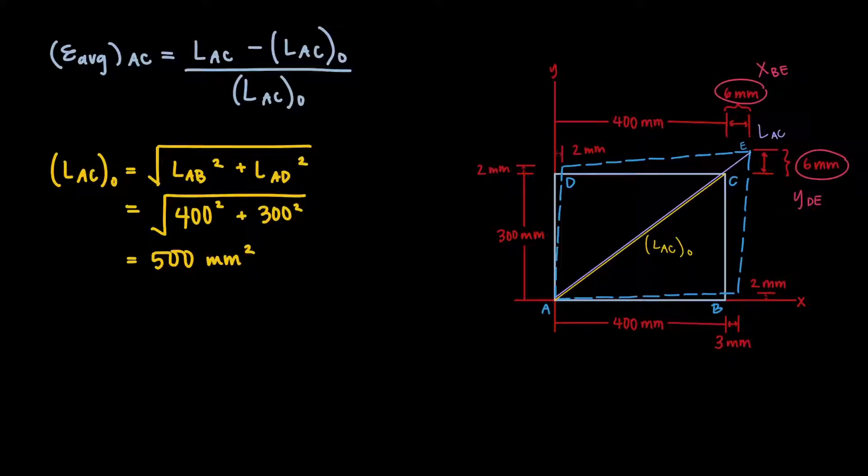Let's think about what L_AC is. Technically, it's actually L_AE now, since the new diagonal runs from point A to point E. So to use the Pythagorean theorem, we need to create a right triangle where A squared is the horizontal distance from A to E, and B squared is the vertical distance from A to E. How much was the rectangle stretched in the x direction? We already know the horizontal distance from point A to B, which is 400 millimeters. To that, we'll add the horizontal distance from B to E, which we'll call x_BE. That's 6 millimeters.